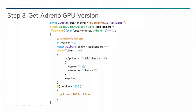For step three, after confirming that the renderer of the GPU is an Adreno device, the same string returned in step two needs to be parsed for the version number of the GPU. The version number must be greater than or equal to 205. Here is a sample code showing a simple method to get the version number.